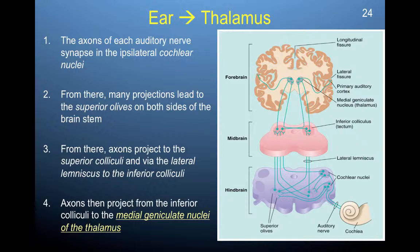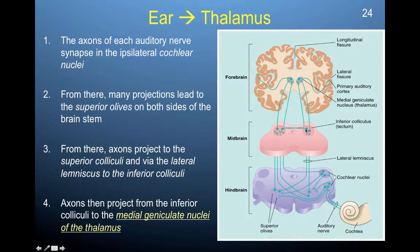It travels from there up along the lateral lemniscus to your inferior colliculus. Axons then project from the inferior colliculus to the medial geniculate nuclei of the thalamus.